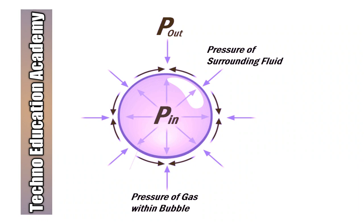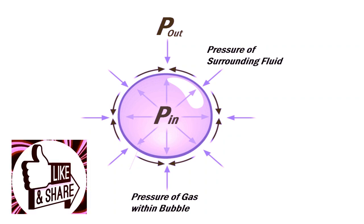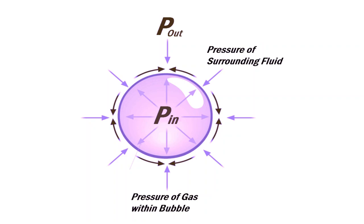Since air is a gas, it exerts an equal force on every surface point it comes in contact with. In the case of bubbles, air molecules trapped inside experience a force from the air molecules outside the bubble. They in turn also exert an equal and opposite force. Due to this, the air inside tries to gather into a shape that minimizes its contact with the outside air. The resultant shape is always spherical.